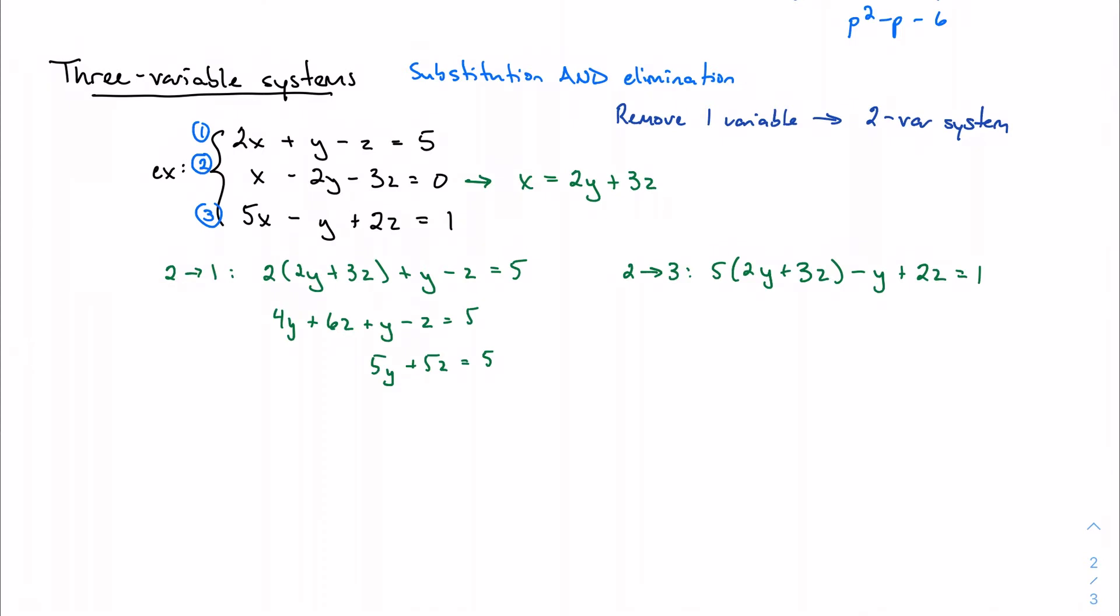We actually can divide this through by five, because if the pair that satisfies this top equation works, it will also satisfy this one. This is that scalar that I was talking about in the last video. So if y plus z equals one, and that is considerably easier to deal with, so we're going to hold on to that and come back to it later.